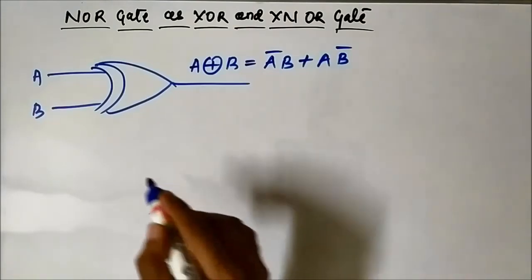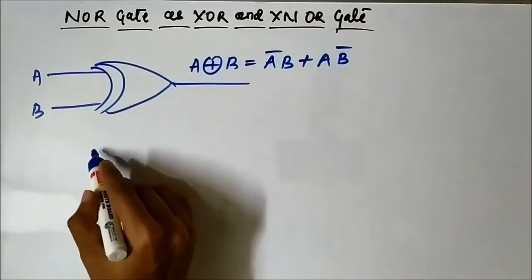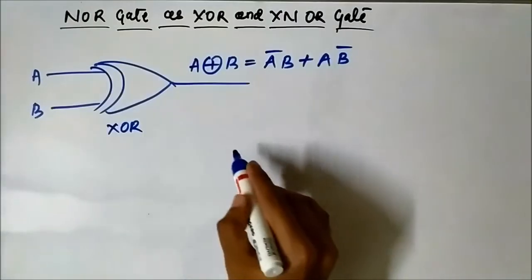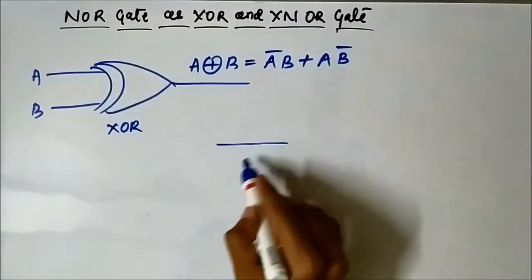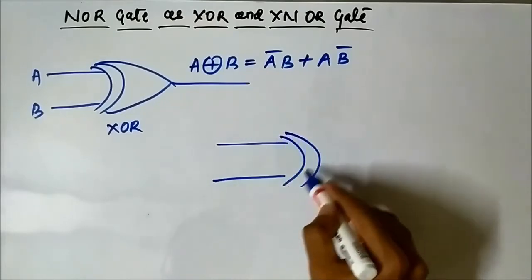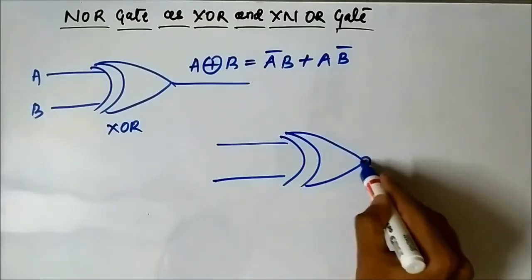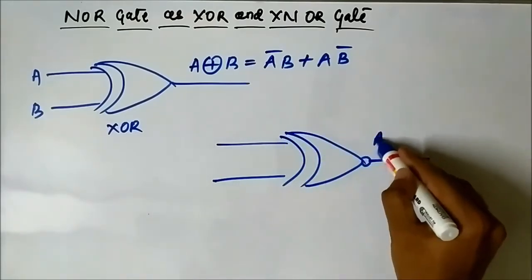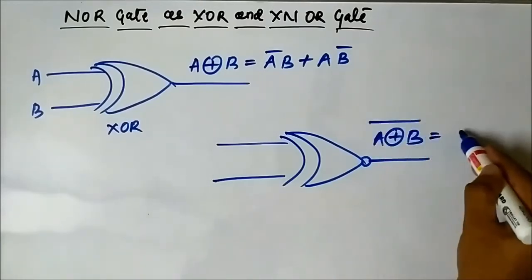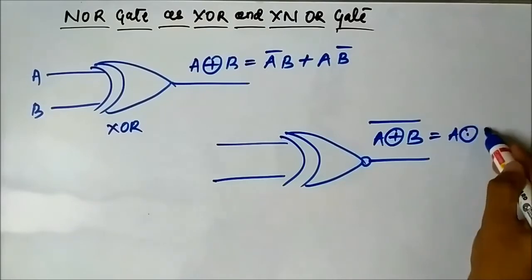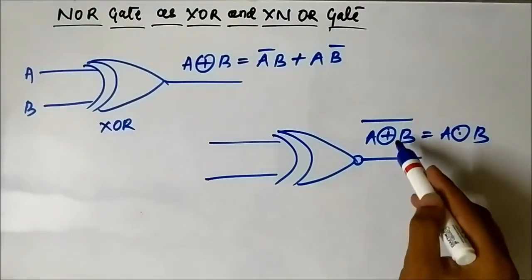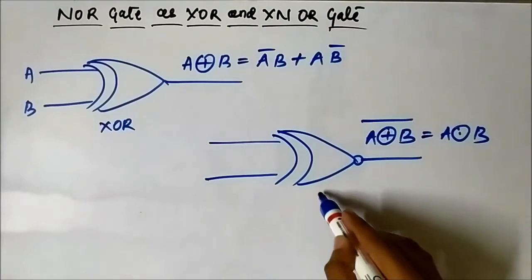And the XNOR — the XNOR is the same but the complemented version of the XOR. It is nothing but the complement of XOR. This is the XNOR output, and this is the XNOR symbol — it is the complement of the XOR output.